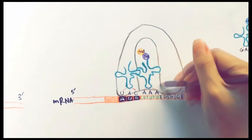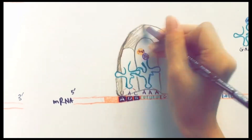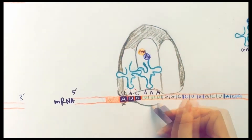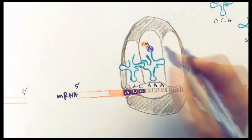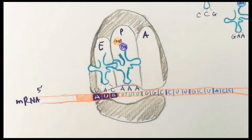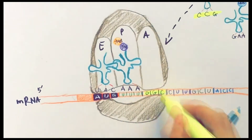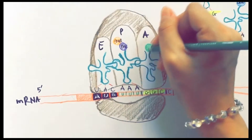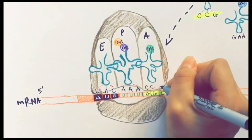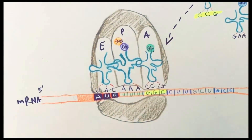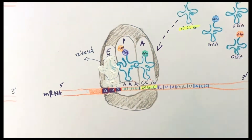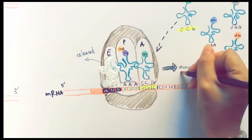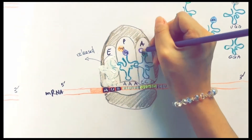After the peptidyl transfer reaction is complete, the tRNA at the P-site releases the amino acid onto the tRNA at the A-site and becomes empty. At the same time, the ribosome moves to the next codon in the mRNA in the 3' direction. This stage is known as ribosomal translocation. The A-site is now unoccupied and ready to accept a new tRNA. As a result, the empty tRNA is now in the E-site and the peptidyl tRNA is in the P-site. The cycle is repeated for each codon on the mRNA.